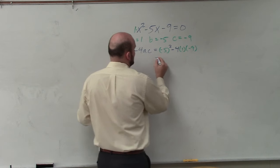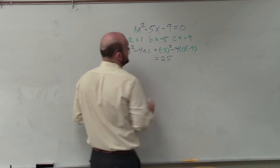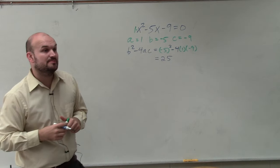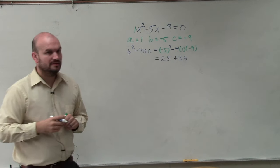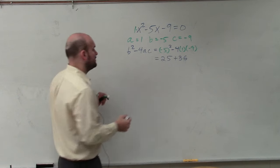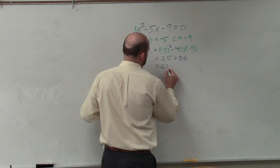And when we get that value, we have 25. Negative 4 times negative 9 is going to be a positive 36. Yes? So therefore, that equals 61.